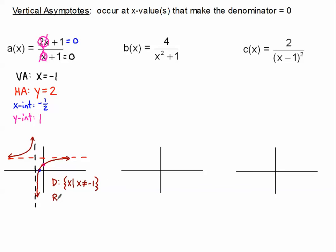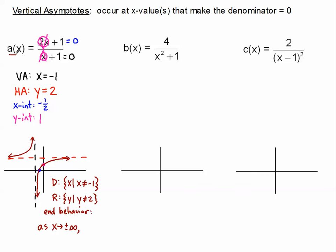Let's do our range. The range is every value except for the horizontal asymptote value, which was 2. So all y except y cannot equal 2. For end behavior, since both ends are doing the same exact thing, x approaching positive or negative infinity: both the far right and far left ends are trying to reach the horizontal asymptote, the value of 2. So a of x is approaching 2.